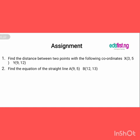So now having done that, we have two assignment equations for us to solve. Number one: find the distance between two points with the following coordinates. X is 3 and 5, Y is 9 and 12. Number two: find the equation of the straight line. A is 9 and 5, B is 12 and 13. Thank you very much for your time.